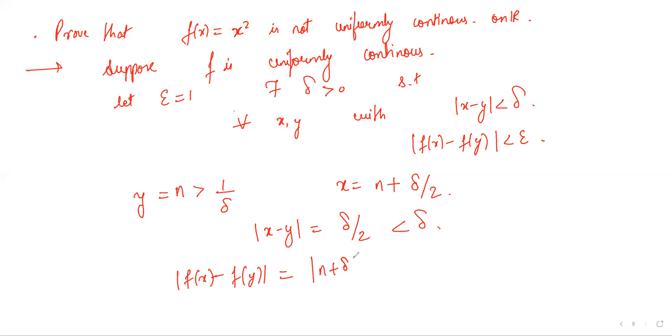So why is n greater than 1 over delta? That's something I'm choosing. Why did I choose this way? You will understand in a minute. See, what are we trying to do? We are trying to get a contradiction to this, so I will produce x and y so that this does not work.